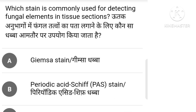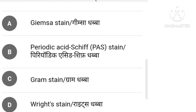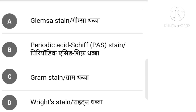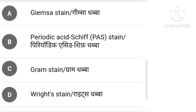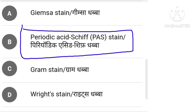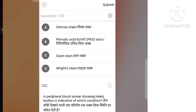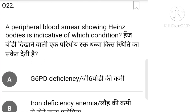Which stain is commonly used for detecting fungal elements in a tissue section? The right answer is option B, which is the stain commonly used for fungal element detection.